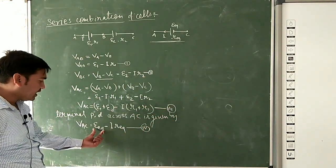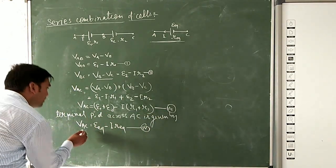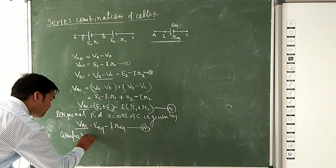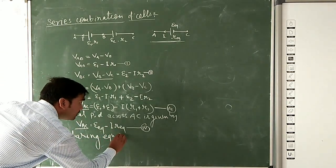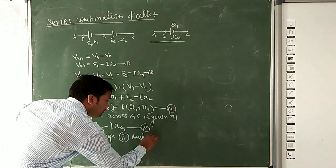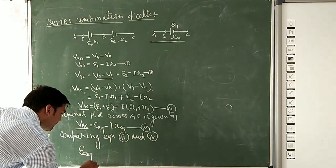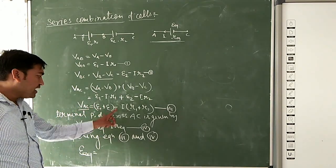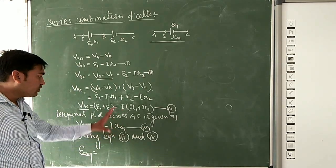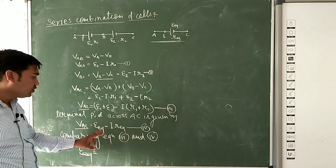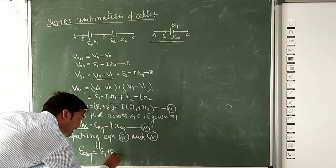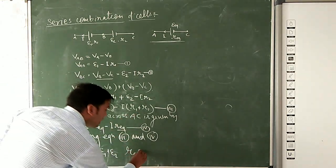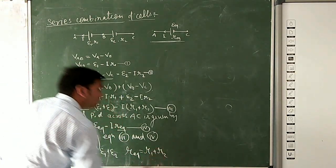Comparing equations 3 and 4: since both left-hand sides are equal, the right-hand sides must also be equal. The I terms cancel. Therefore, E_equivalent equals E1 plus E2, and R_equivalent equals R1 plus R2.